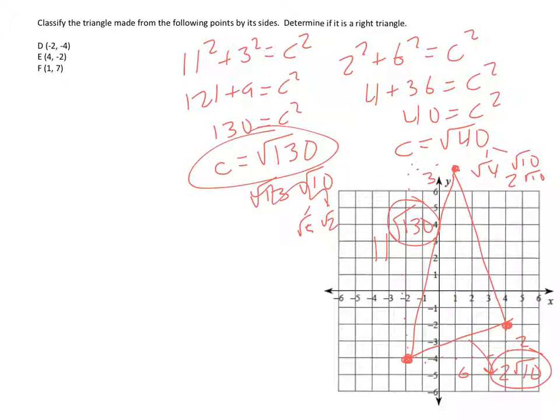And then lastly, this one goes from, let's see, horizontally it goes from 1 to 4, so it goes over 3. And it goes from 7 to negative 2, so it goes down 9. So 3 squared plus 9 squared equals c squared. So 9 plus 81 equals c squared.